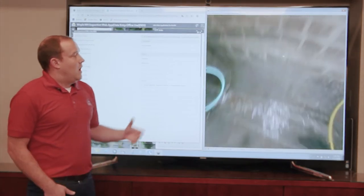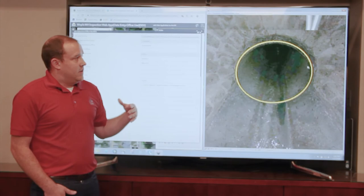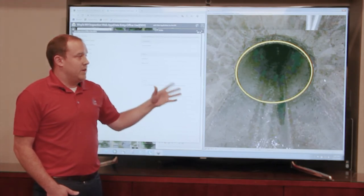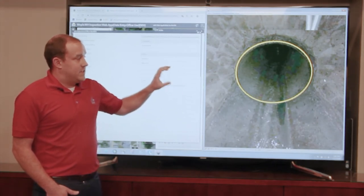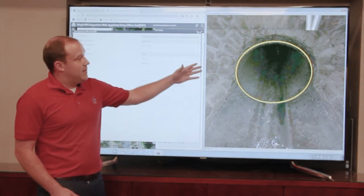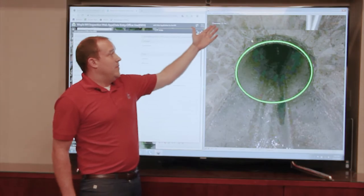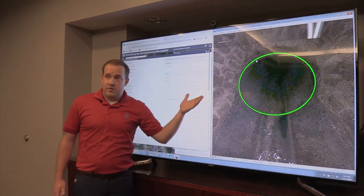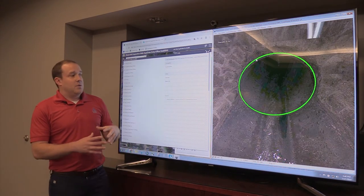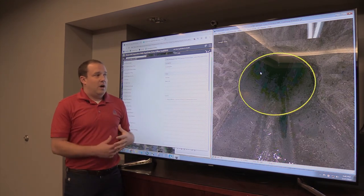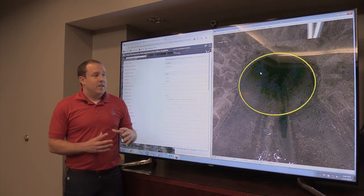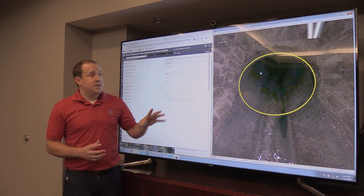Since this is a geometric data-based scan, there's measurements associated with that. We're able to select on the graphic and it will bring up a dimension. This is actually a 22-inch vitrified clay pipe. Using that geometric data, our technicians are able to get very precise measurements on all the components within the structure.